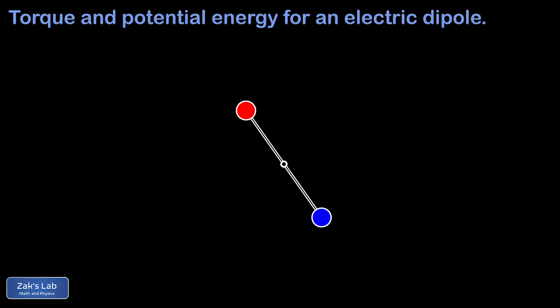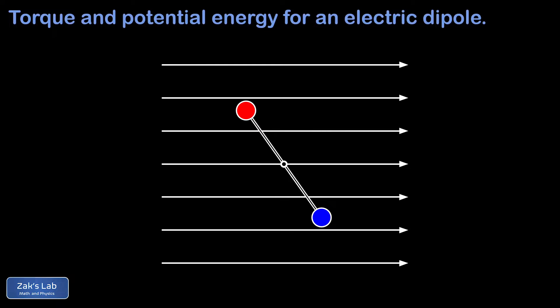In this video we continue our study of electric dipoles by examining what happens to an electric dipole in a constant electric field. It turns out that the net force on the dipole is always going to be zero, because it experiences two electric forces that are equal in magnitude but opposite in direction on the positive and negatively charged ends of the dipole.